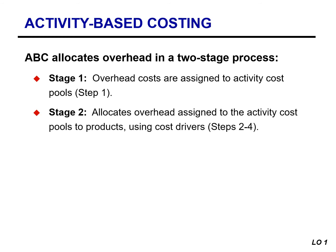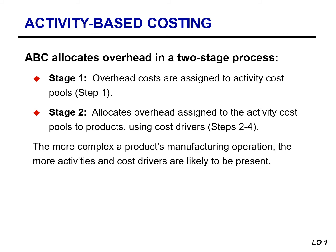The second stage, which comprises steps two through four, allocates the overhead in the activity cost pools to products or services using cost drivers. The cost drivers measure the number of individual activities undertaken to produce goods or perform services. Examples include the number of purchase orders, number of setups, labor hours, and number of inspections. The more complex a product's manufacturing operation, the more activities and cost drivers are likely to be present.